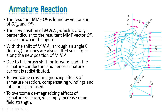The brushes that were placed on the original axis now need to be placed on the new axis. Due to this brush shift or forward lead, the armature conductors and hence the armature current are also redistributed — one conductor now has current going inward and another has current coming outward. So the main effects of armature reaction are: it cross-magnetizes, changing the direction of the main field, and it demagnetizes, weakening the main field. To overcome cross-magnetizing effects, compensation windings and interpoles are used; to overcome demagnetizing effects, the main field strength is simply increased.